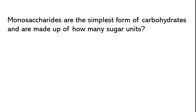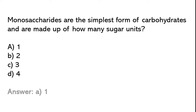Monosaccharides are the simplest form of carbohydrates and are made up of how many sugar units? Options: 1, 2, 3, 4. The correct answer is option A: 1.